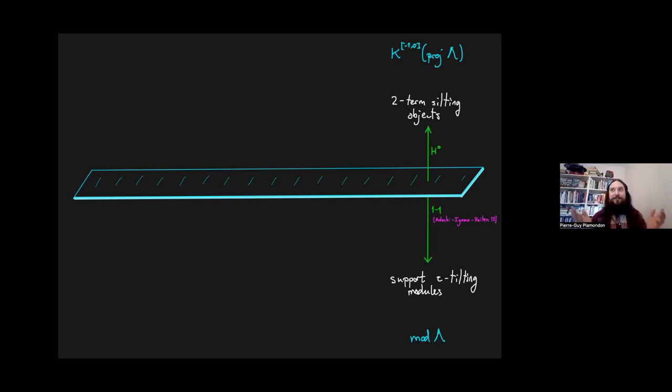So that's one thing. Another thing you can look at, and we've seen those before today as well, you can look at torsion classes or torsion pairs inside the module category. Torsion classes form a nice lattice for the inclusion. They're a very nice object to study. And it has also been known since the start of tau-tilting theory that if you restrict to the functorially finite ones, they're in bijection with support tau-tilting modules.